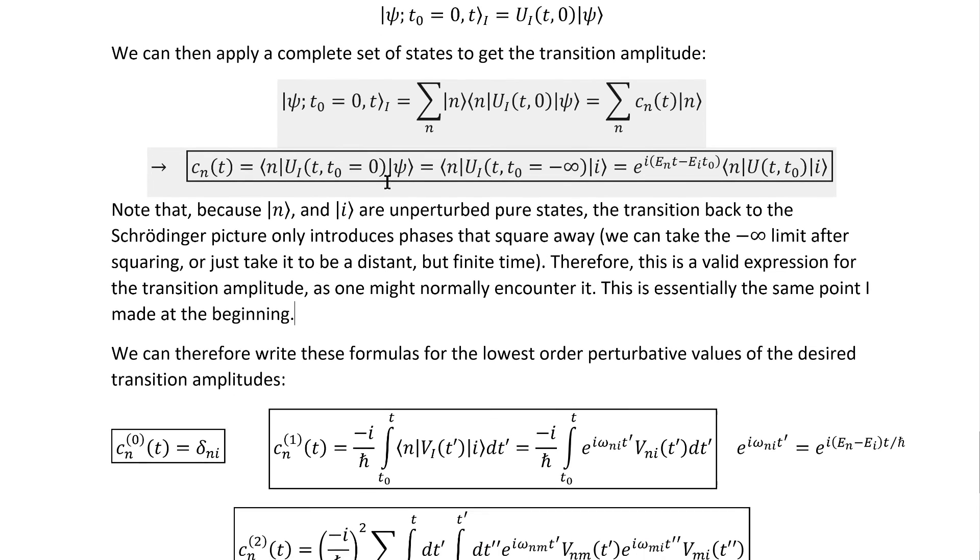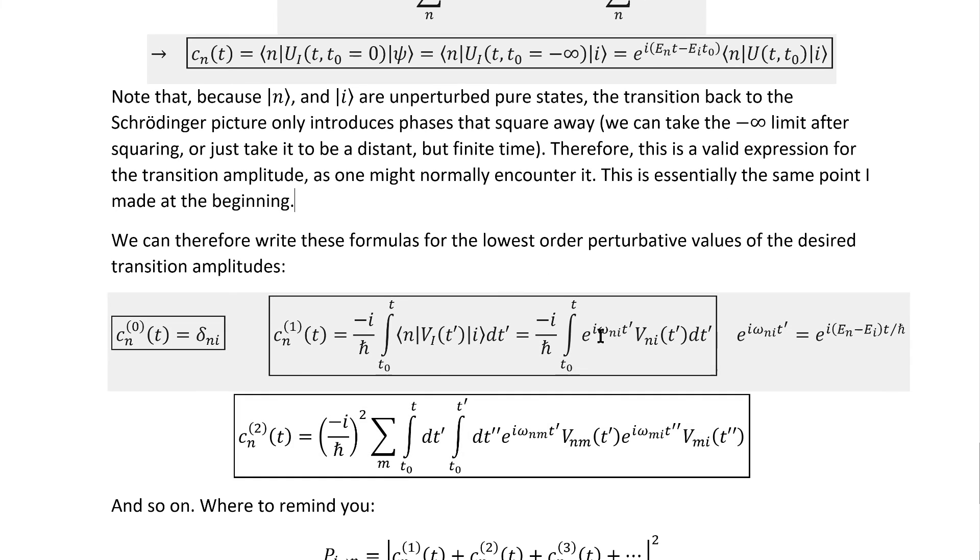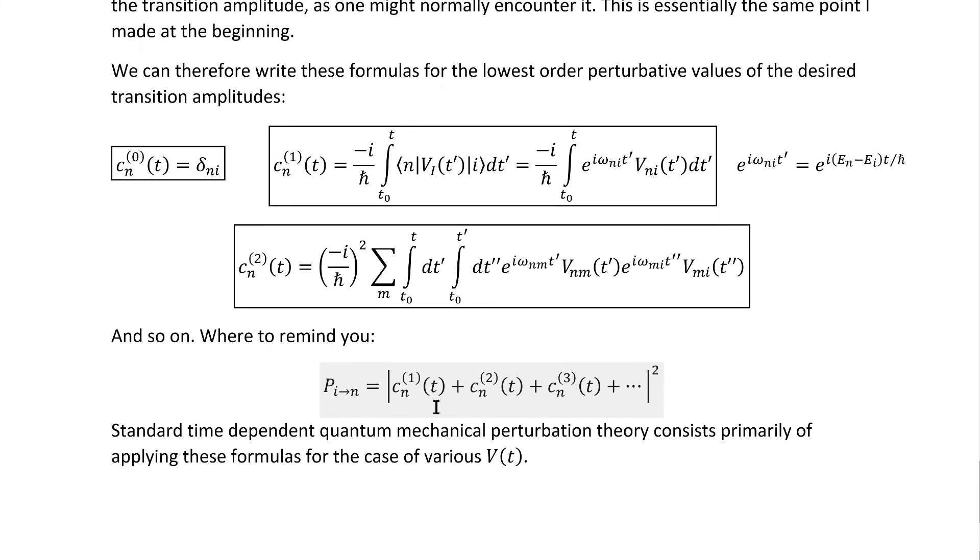And with this relation, we are ready to write out the lowest order of perturbative contributions to these CN's here. Note that writing them in terms of the familiar Schrödinger picture quantities that we'll end up actually working with in practice introduces all these phases here. Now I hope it was clear, but I suppose I may as well note it. We, of course, have to sum the perturbative corrections term by term before we take the square to get the probability amplitude. From time to time, I have seen students square before they sum.